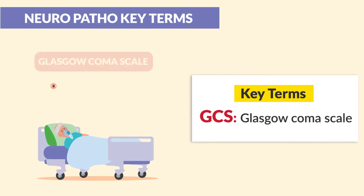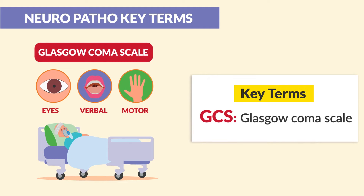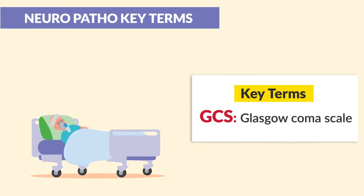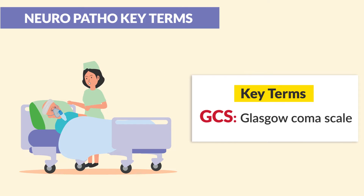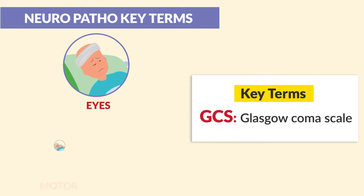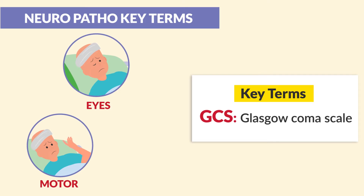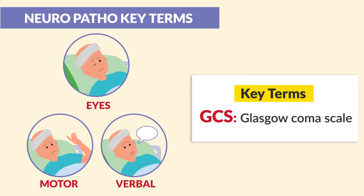The GCS, the Glasgow Coma Scale, is used objectively to describe the extent of impaired consciousness in all types of clients, from acute medical to even trauma clients. The scale assesses clients according to three different aspects of responsiveness: eye-opening, motor reflexes, and verbal responses.